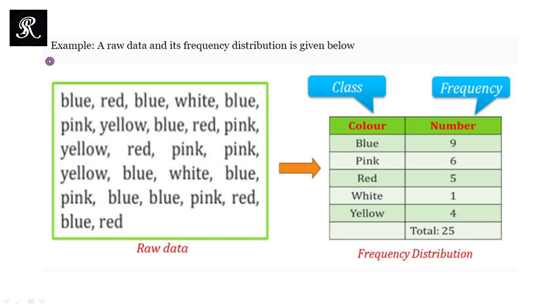Let us have a look at an example. Here in this square, we are given the raw data, where we are given few colors. Now what we need to do in order to present this raw data into the frequency distribution, we need to classify or categorize it into different categories. So here the categories are blue, pink, red, white, and yellow color.